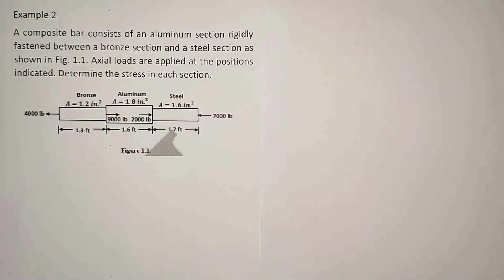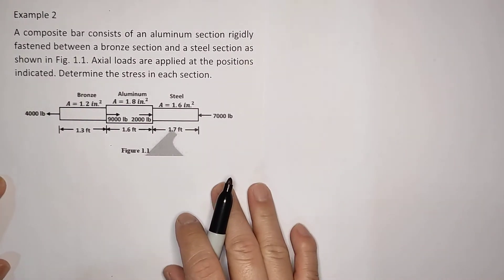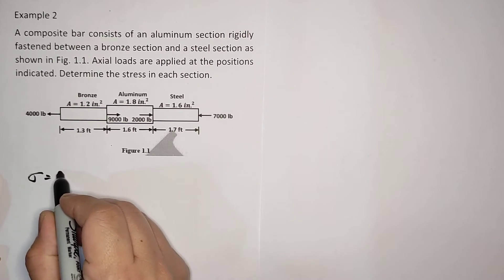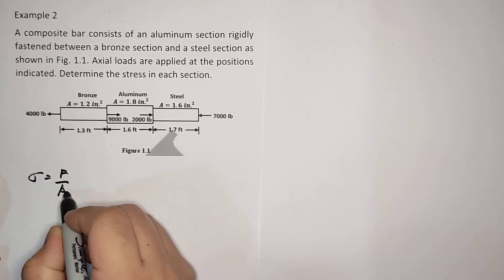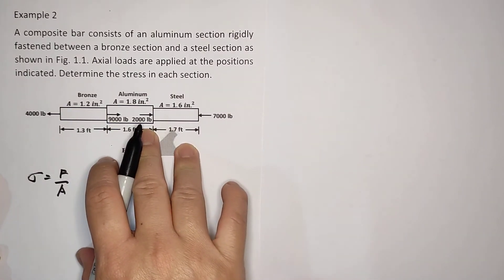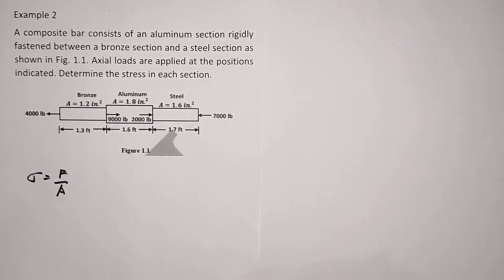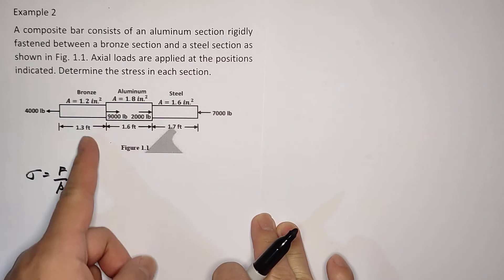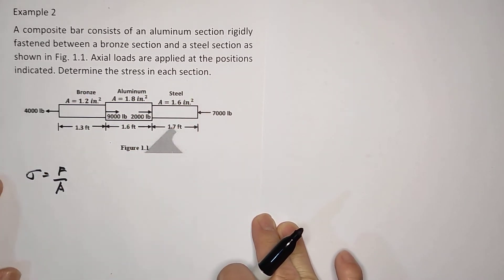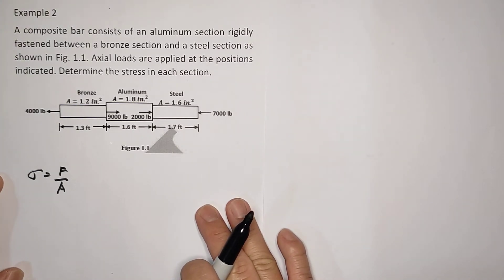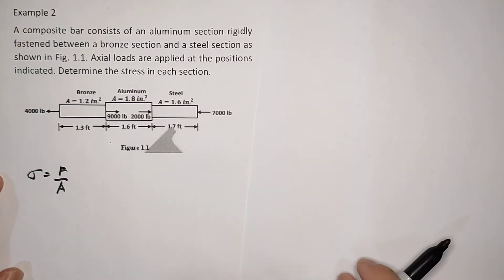How do we solve for the stress? As we discussed last time, stress is force over area. What kind of stress is this? This is normal stress, because we will be analyzing the cross-section of the bronze, aluminum, and steel. This is actual loading — a normal load in tension and compression.